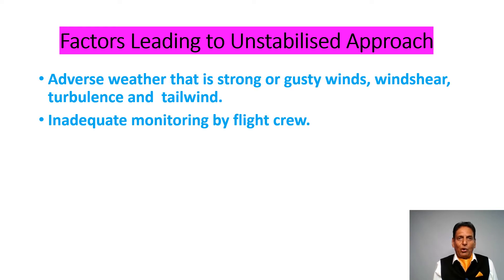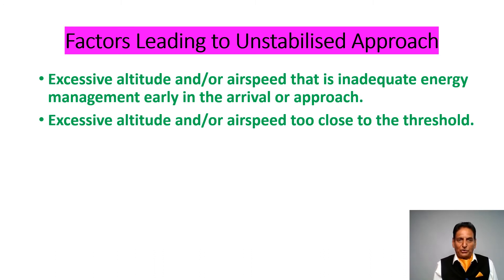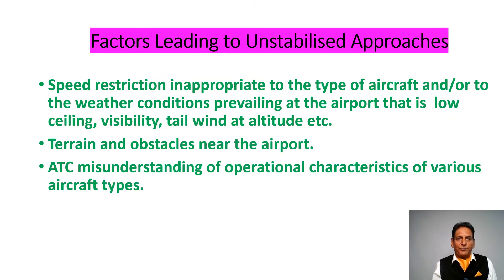Inadequate monitoring by the flight crew. Excessive altitude and/or airspeed — that is, inadequate energy management — early in the arrival or approach, or excessive altitude and/or airspeed too close to the threshold. Speed restrictions inappropriate to the type of aircraft and/or to the weather conditions prevailing at the airport, such as low ceiling, poor visibility, tailwind at altitude, etc.